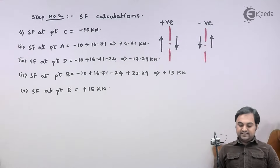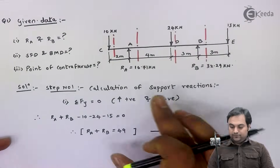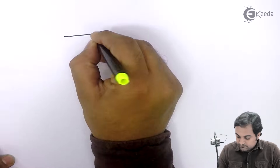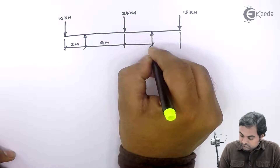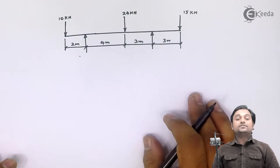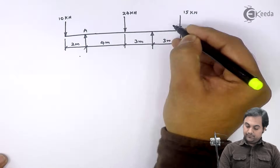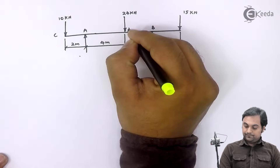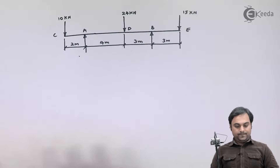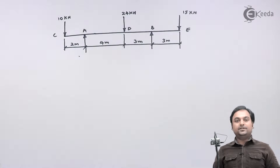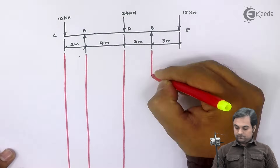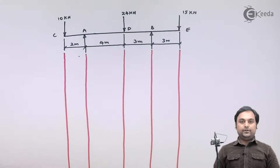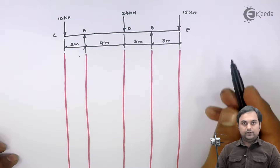Now I will be drawing the SF diagram. For that I have to draw the beam once again. This is the overhanging beam, supported at A and B. I will project the points downward for drawing the shear force diagram. The length of the shear force diagram should be equal to the length of the beam.